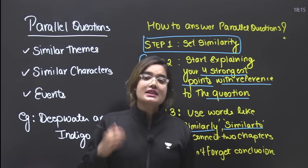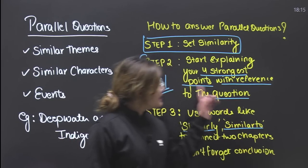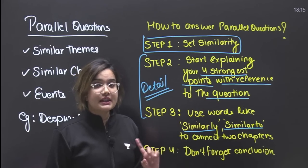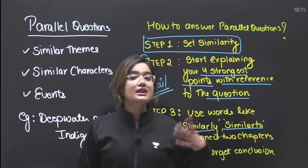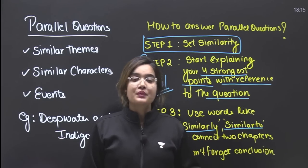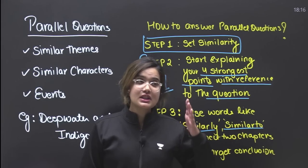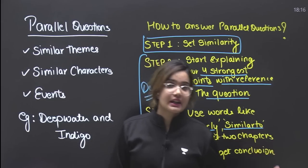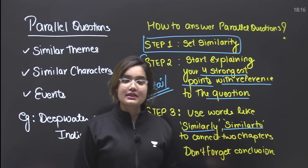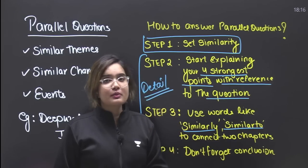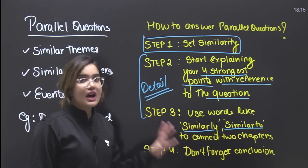In the conclusion you can talk about what happened next — for example, how William Douglas's life changed because of this, how he was never afraid again, how William Douglas recorded his name as one of the longest-serving judges in the Supreme Court of America. If you know this information, you can add it. Otherwise, you can simply conclude using different words from what you have already said. With these 4 points, you can easily answer your parallel questions.